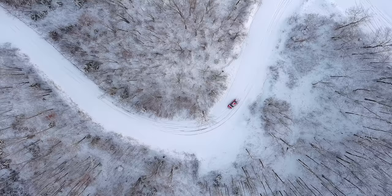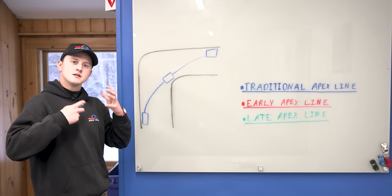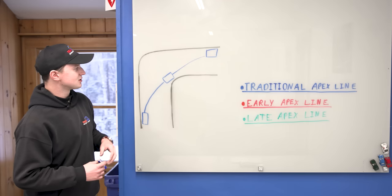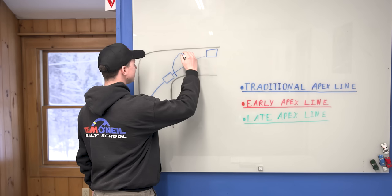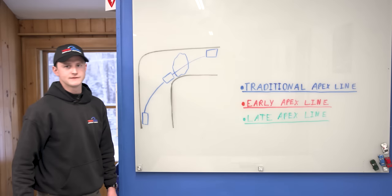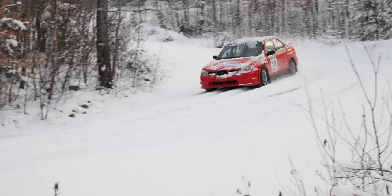Within the confines of this whiteboard, the traditional apex line is the fastest way through a corner — it's the straightest path, so you can carry the most speed. That's why in a racing scenario a lot of people like to use it. The problem is you're using every available inch of the road, which is great on a racetrack where you know exactly what's coming. In rally, you haven't seen the corner before, so if anything changes — like a patch of ice — you can get pushed off the road and potentially end your event.